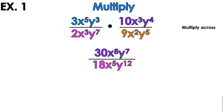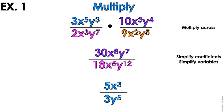2 times 9 is 18, x³, x², x⁵, and y⁷, y⁵ is y¹². I'm going to simplify 30 over 18 just like any other fraction. That's 5 thirds, and then we'll use our exponent rules to simplify x⁸ over x⁵. I'm going to have 3 x's left over on top. And then I have y⁷, y¹². When I simplify those, I'm going to have 5 y's left over on the bottom because the 12 was bigger and was on the bottom.